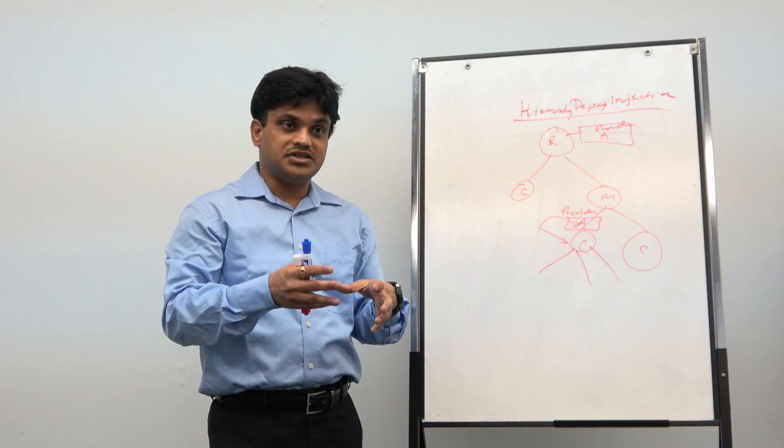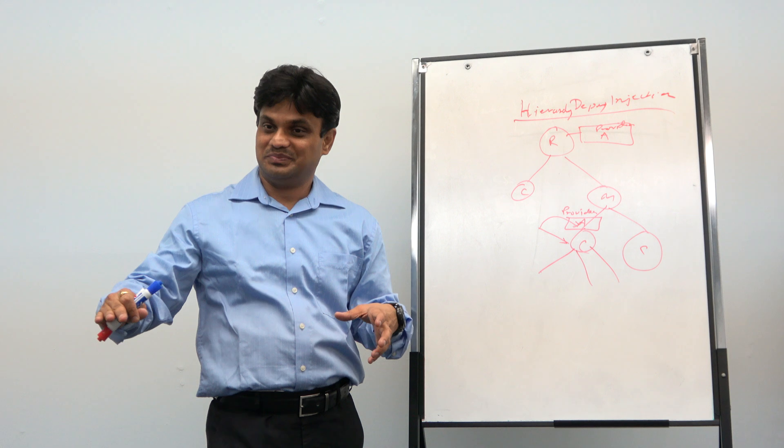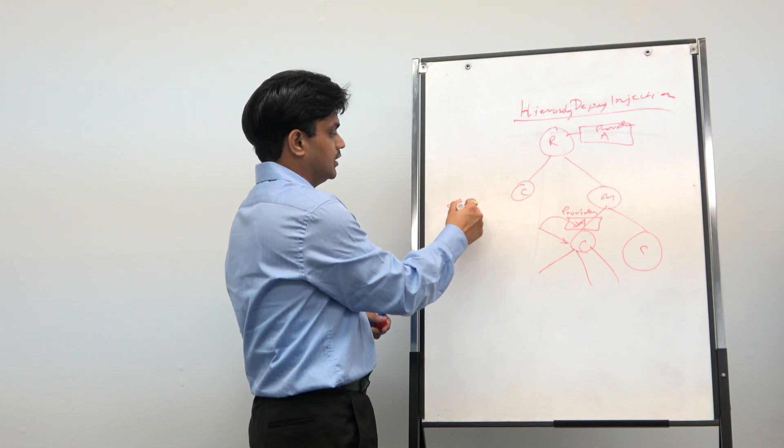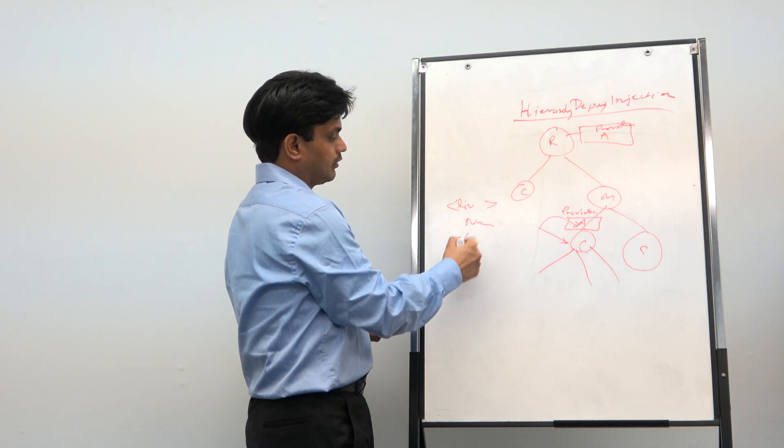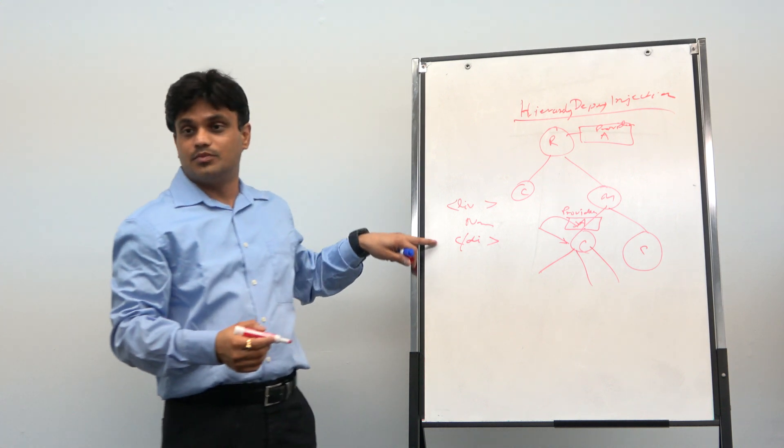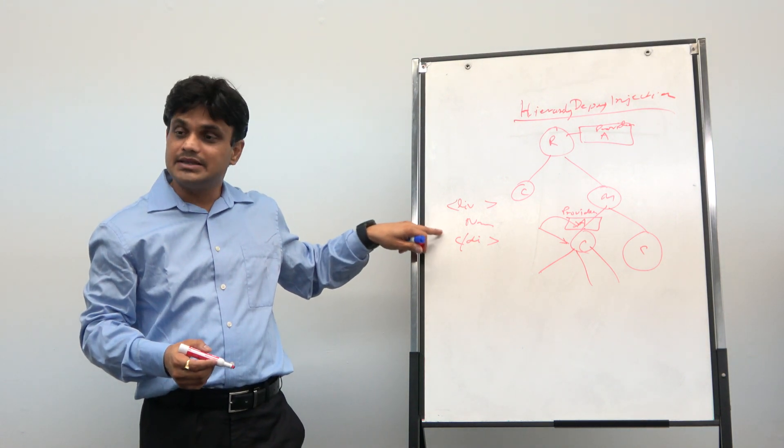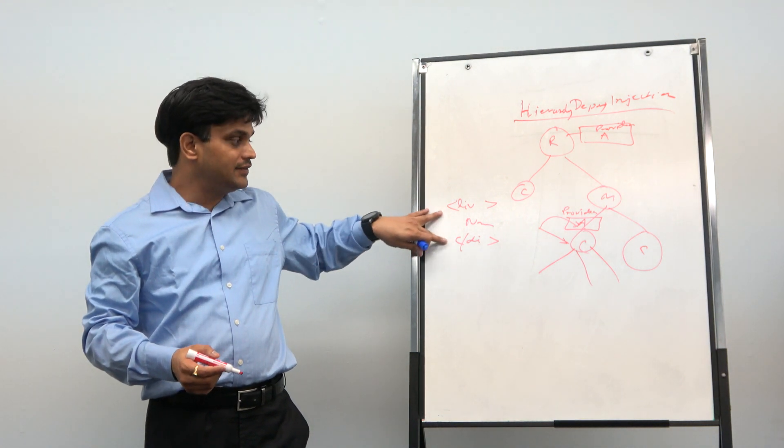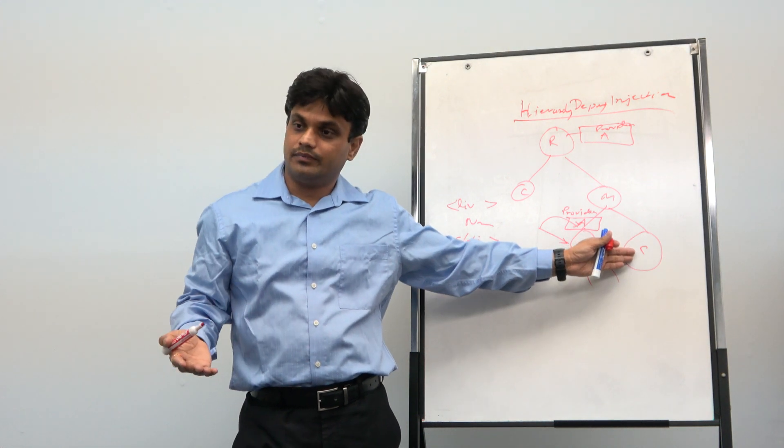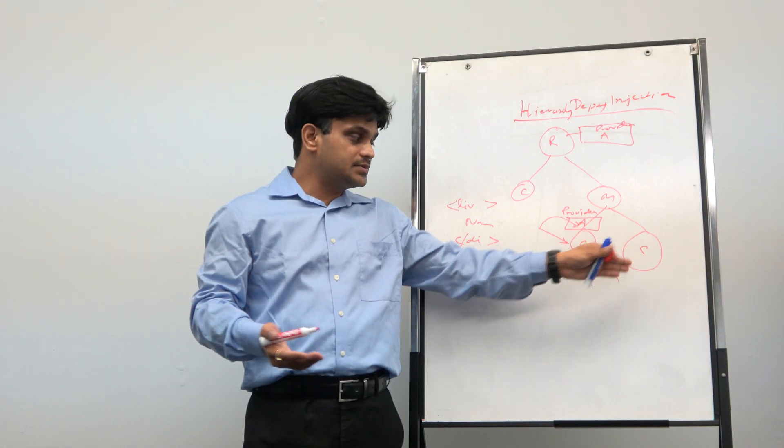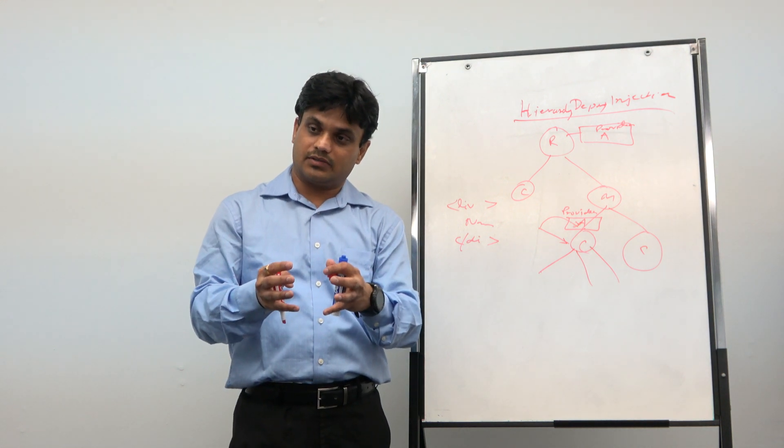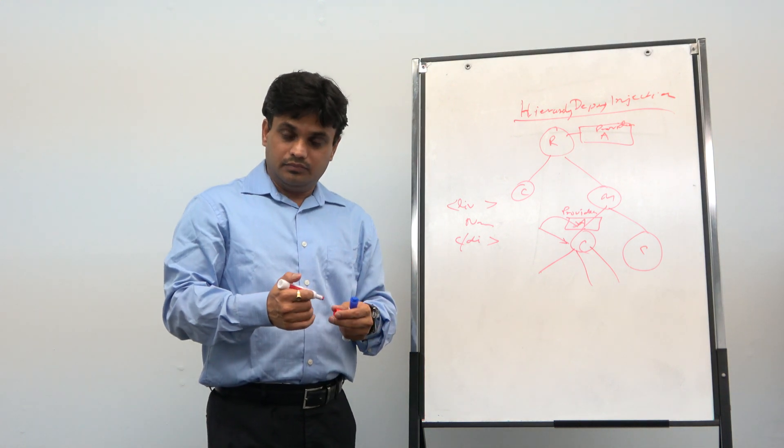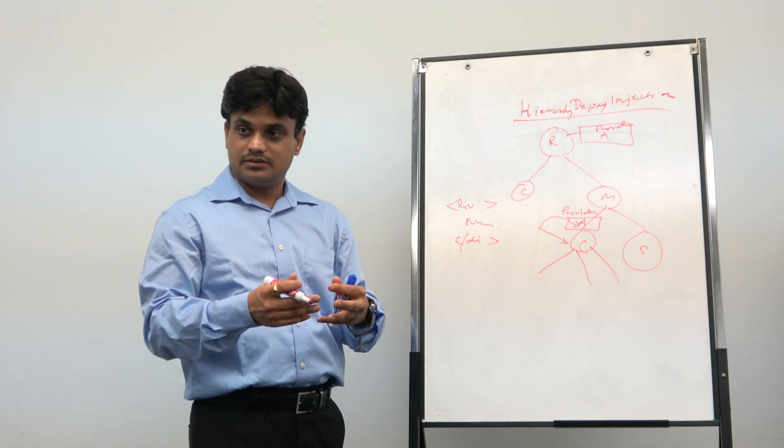Basically, in Angular, you can inject the dependency at any level now. Even at the tiny div level you can inject. For example, you have a small div over here, and then you are showing some name, even at this level you can inject a dependency. One service could be at that level also. Because this div is nothing but just a single component. What is the minimum thing that we can create after component? That just the DOM level, small thing. That is called as directive.